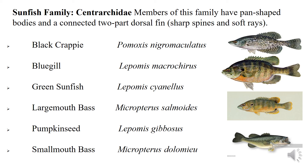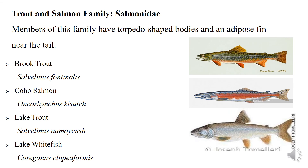Catfish have a flat head when viewed from underneath. They have three median fins: anal fin, adipose fin and dorsal fin. Other fish that belong to this family include black bullhead, brown bullhead, channel catfish, flathead catfish and yellow bullhead. The sunfish family (Centrarchidae): members have a pan-shaped body and a connected two-part dorsal fin. Their bodies are deep and compressed laterally, providing a round and thin pancake-like appearance.